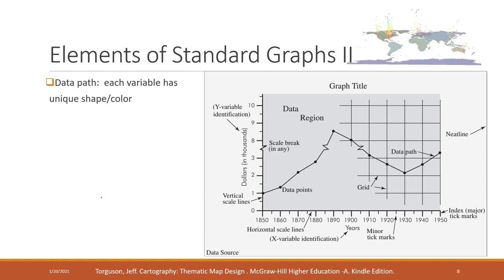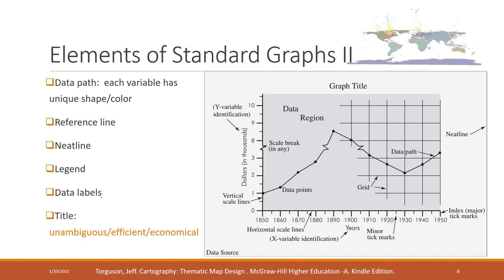We also have the data path. If you use a line chart or a scatter plot, that can show the trend of the data. Sometimes we may also need a reference line if you want to highlight specific values. The neat line is like the border of the chart. We also have the legend — if you are using different colors, different shapes, or different sizes, we always need the legend. And we have labels and a title, which should be clear and efficient. Sometimes we may also want to include the data source — where you got the data.